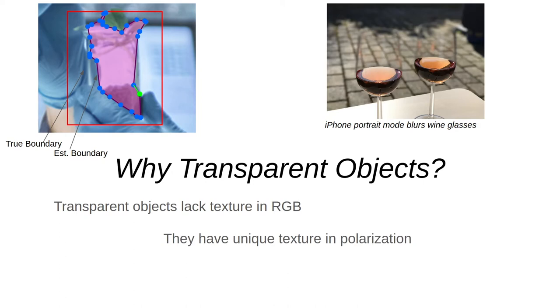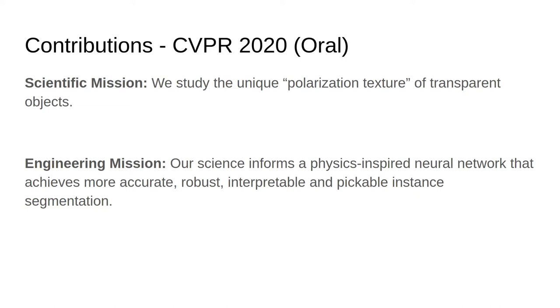So I guess you could say transparent objects were the clear choice. The contributions of our work is twofold. First we study this polarization texture, the what the where the why, and then we use that understanding to create a physics inspired neural network that is accurate, robust, interpretable and can even pick up transparent objects.